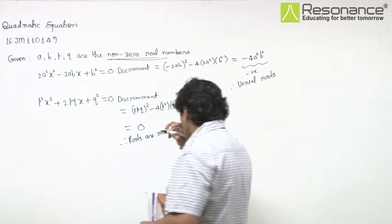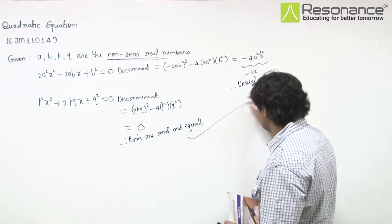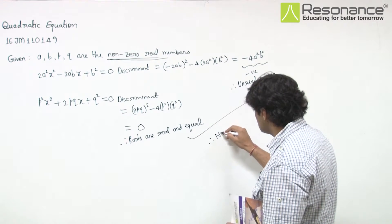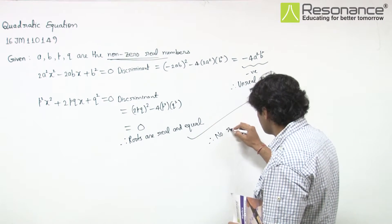Now one equation's roots are unreal, and the other has real and equal roots. That means no common root is possible, meaning no root is common.